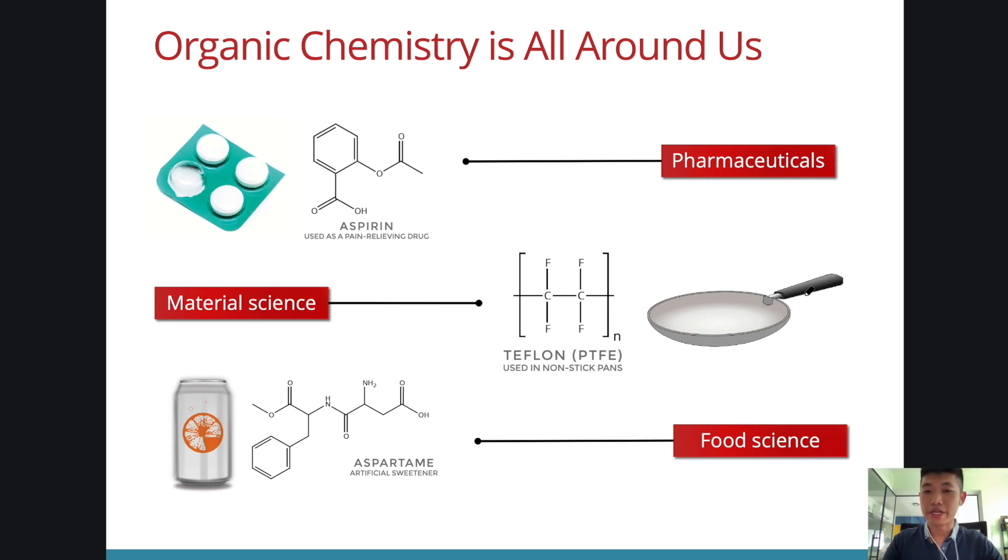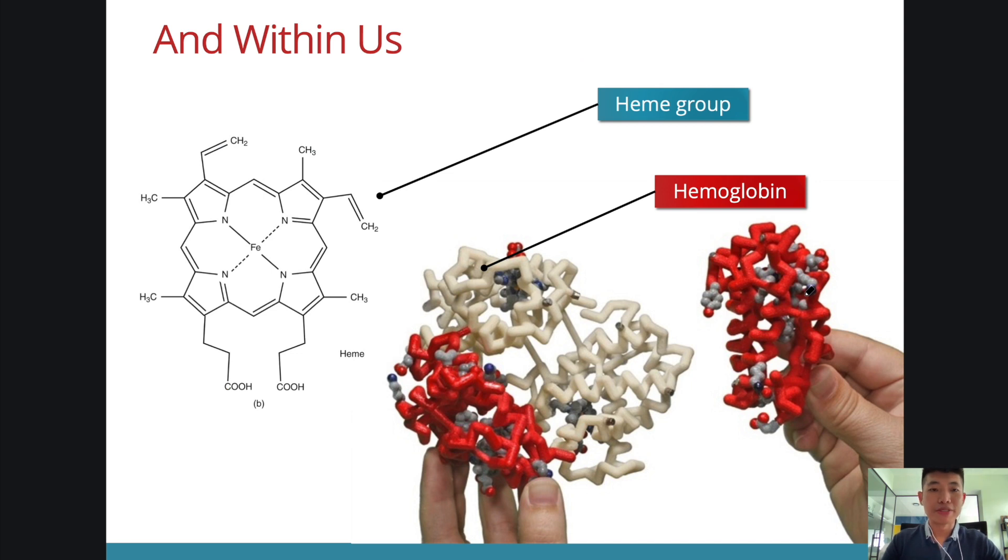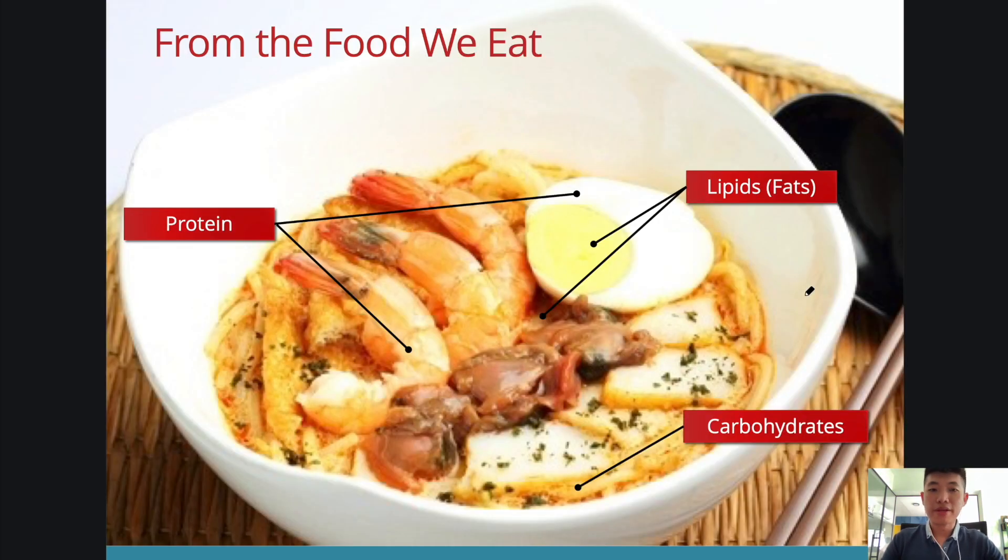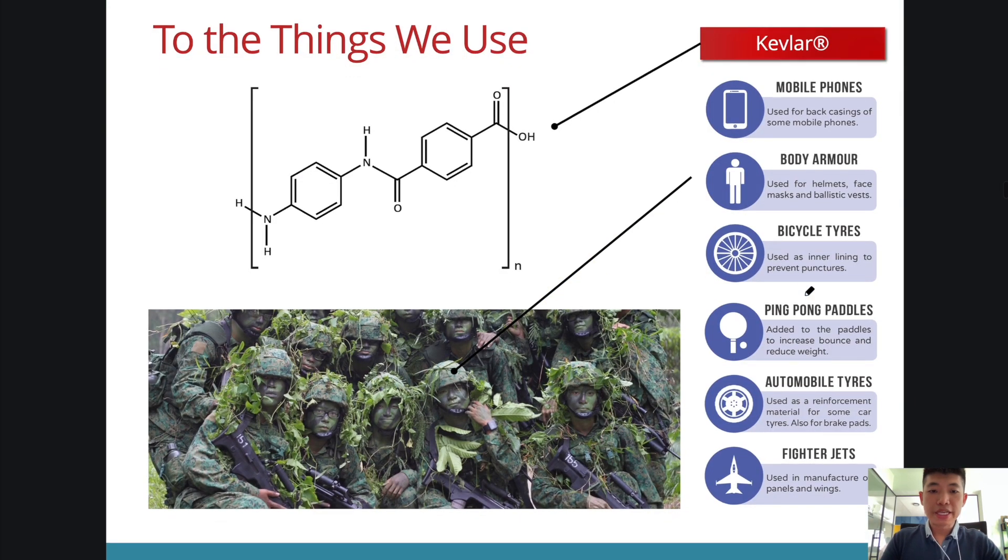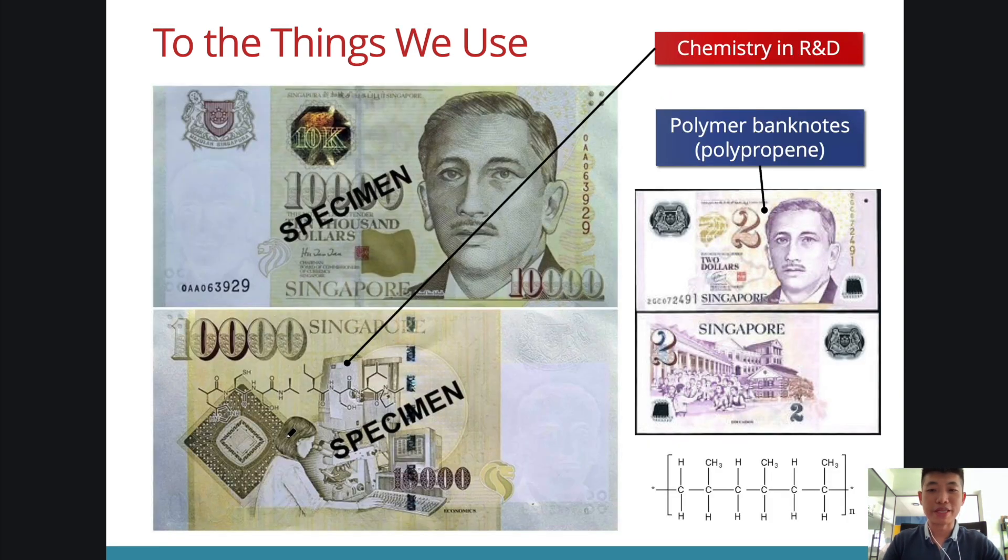Besides its presence in living things, organic chemistry is all around us in all the pharmaceutical products, in material science, and also in food science. Within us, we also find many organic compounds, including hemoglobin, which contains this heme group containing iron, which binds to oxygen and helps our blood to transport oxygen. Organic molecules are also found in the food that we eat, coming from carbohydrates, proteins, and fats. Things that we use, like materials, mobile phones, tires, and even the helmet that is used by soldiers, make use of organic compounds. Kevlar is one of the materials that is very strong and can withstand the heat of a bullet.